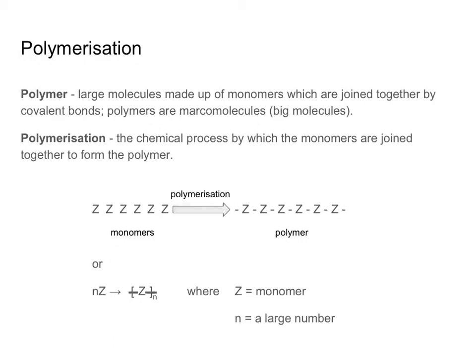Polymerisation itself is a chemical process. I say process because if we were to look at this as a reaction, it actually is a series of many separate reactions. What happens is monomers react together and join to form a chain of the polymer. If we take a look at our diagrams down below, we've simplified the polymerisation process, where we are representing a monomer as just a Z, and they react together and form covalent bonds to form the chain.